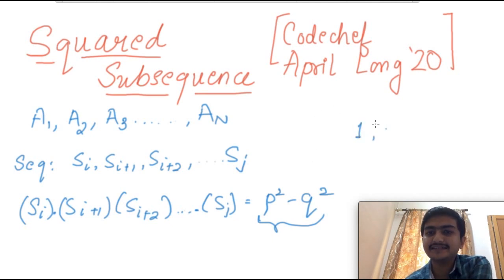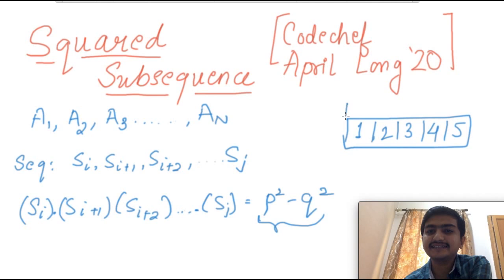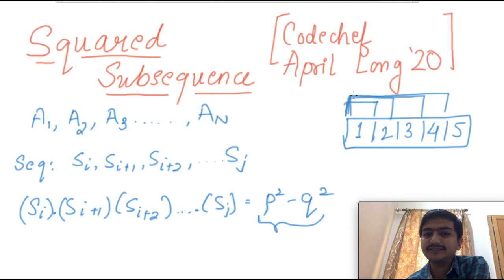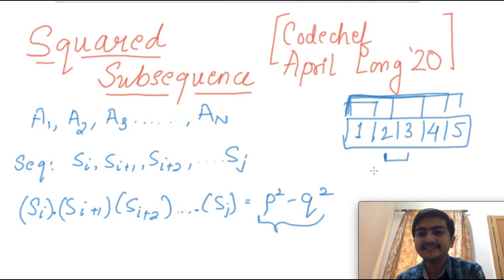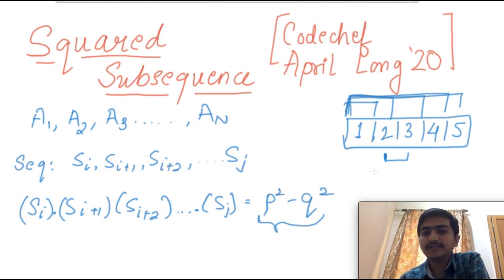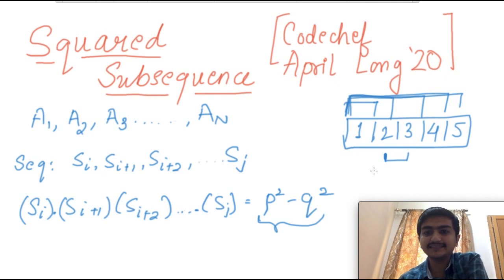For example, suppose I have an array 1, 2, 3, 4, and 5. A continuous subsequence means I can start with 1, or 1,2, or 1,2,3, or 1,2,3,4, or 1,2,3,4,5, or I can start from 2 and 3, and so on. Basically any continuous sub-array can be defined as deleting some elements from the left and some from the right of the given array.